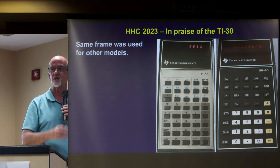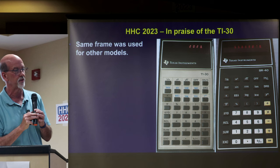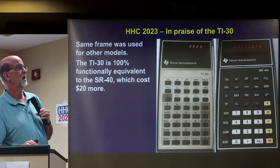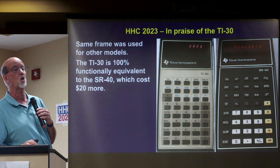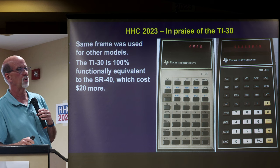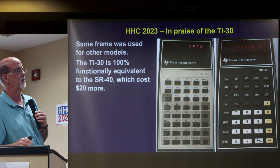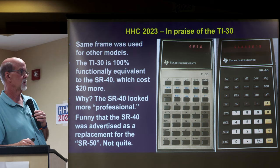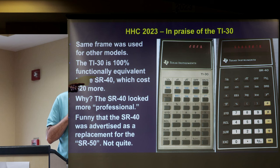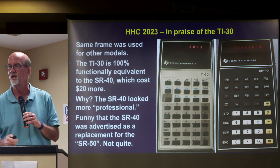This is the SR-40. The keys are identical other than they're actually molded onto the keys as opposed to written above it on a faceplate. The TI-30 is 100% functionally equivalent to the SR-40, which cost $20 more — maybe because it looked more professional, pulling in some confused people. For the $20 more you got the rechargeable battery pack. Funny that it was advertised as a replacement for the SR-50 — they're nowhere close from a functional perspective. That SR-50 has a lot more functions on it, but caveat emptor.